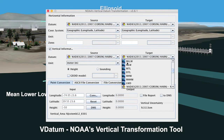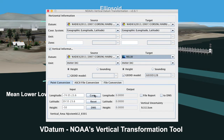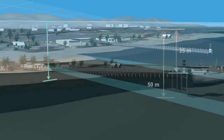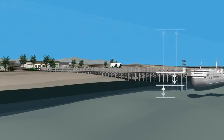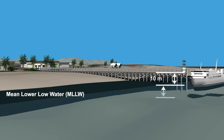Fortunately, NOAA's Vertical Datum Transformation Tool, known as VDatum, allows us to realign existing datasets from one vertical datum to another. Using VDatum to transform our heights from an ellipsoidal to a tidal datum, we see that our pier is 10 meters above Mean Lower Low Water, and the seafloor is only 5 meters below Mean Lower Low Water. This means our ship will have to have a draft less than 5 meters, or find another pier at low tide.